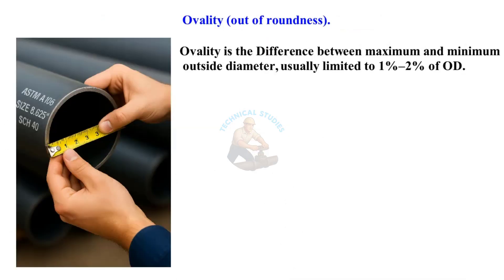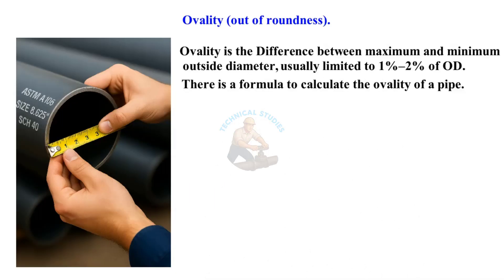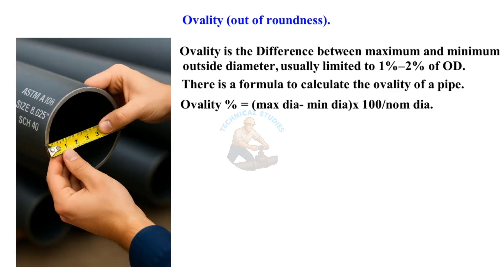Ovality is the difference between maximum and minimum outside diameter, usually limited to 1% to 2% of OD. There is a formula to calculate the ovality of a pipe: Ovality percent equals maximum diameter minus minimum diameter, multiplied by 100, divided by nominal diameter.